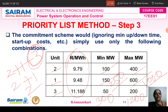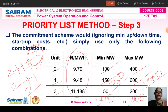Dear students, for the priority list method explanation, first write an introduction about the priority list method, the advantages of this method — it is the easiest method — and then the three steps with the three tabular columns. This is for either 4 or 6 marks. Thank you, students, for listening to this class.